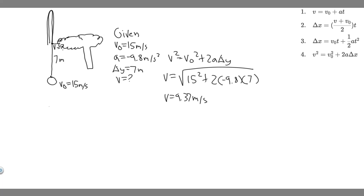Now we're going to do another kinematic problem with a different interval. There's something important to know about kinematics: when you throw something up, the amount of time it takes to reach the top is the same as the time it takes to fall back down to the same height. So we'll find the time from the branch up to the peak, then multiply by 2.